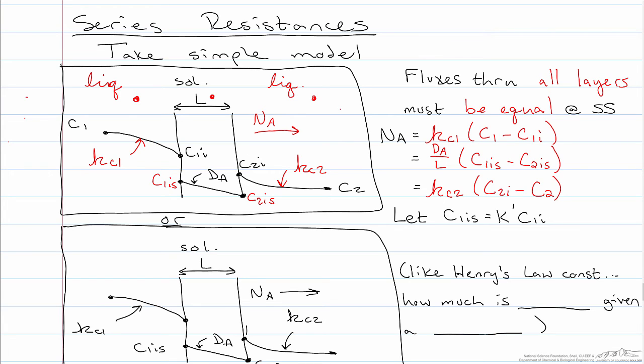At the interface, the concentration in the membrane C1Is, we'll call that equal to K' times C1I. So this K' is an equilibrium constant representing how well that component dissolves into the membrane. Similarly, C2Is equals K' times C2I.